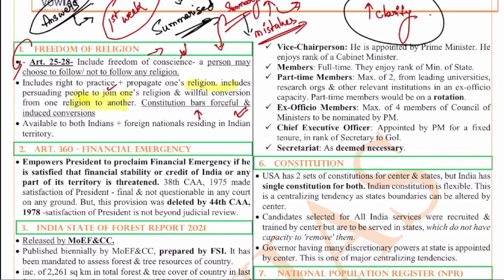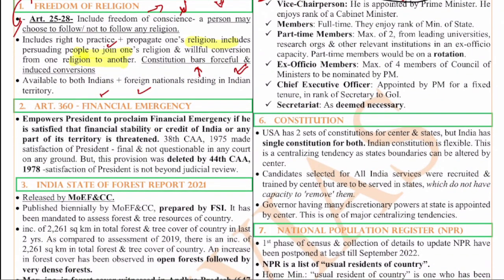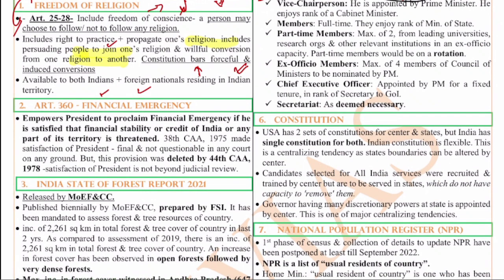Freedom of religion is available both to Indians and foreign nationals. There are few articles which are available only to Indian nationals: Article 15, Article 16, Article 19, Article 29, and Article 30. These five articles are available only to Indian citizens.